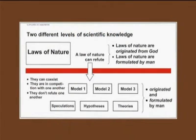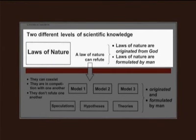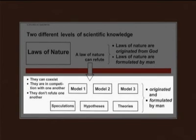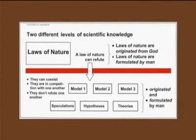Here you see different levels of scientific knowledge. Above the red line you see the laws of nature, and we can say the laws of nature originated from God and are formulated by men. Below the red line we have other levels: models or speculations, hypotheses or theories — all originated and formulated by men. There is a very large gap between the laws of nature and all the other levels of scientific knowledge.